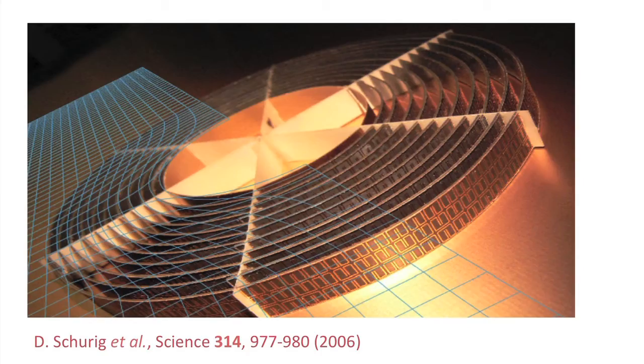Technically, transformation optics uses the form invariance of Maxwell's equations under coordinate transformations, but I know this sounds quite esoterical. I think it can be most instructive to explain transformations with just an example. The best example, according to me, is the invisibility cloak, which was also the first example introduced by Professor Pendry in his first paper.